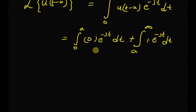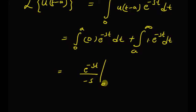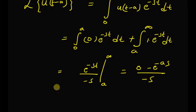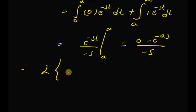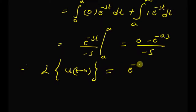Clearly, the first integral is equal to 0, and the second integral evaluates to e to the power minus st divided by minus s, with limits a to infinity. At infinity it is 0, and at a it is e to the power minus a s. Therefore, the Laplace transform of u of t minus a, the Heaviside unit step function, is equal to e to the power minus a s divided by s.